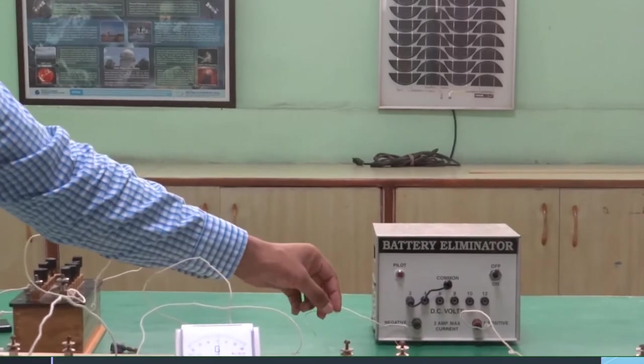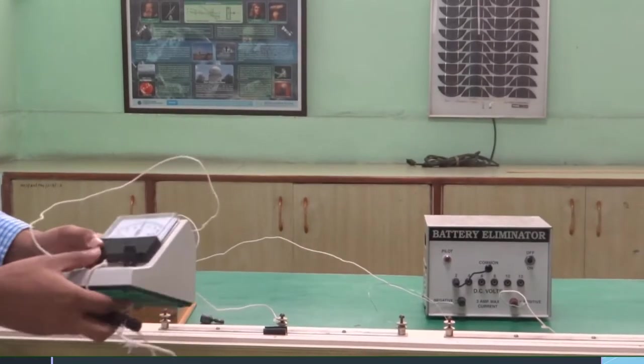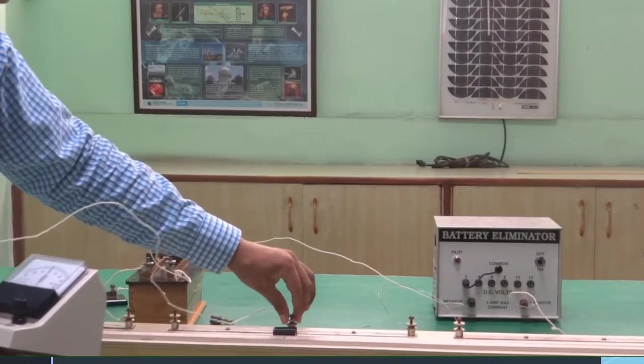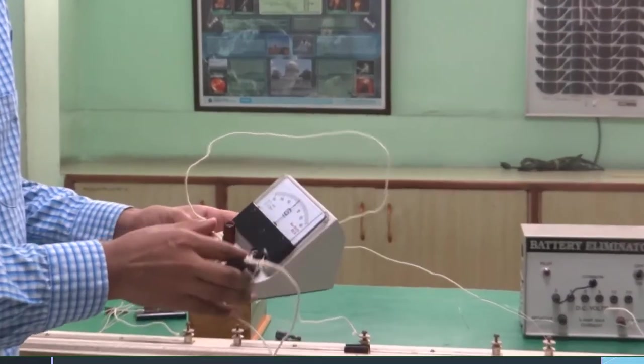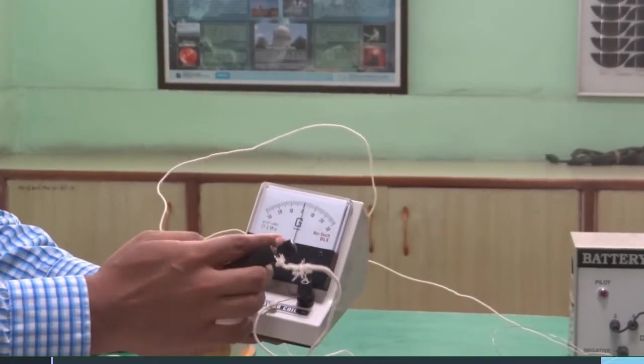The resistance of this wire is unknown. Next important thing is a jockey. This is used to determine the balance point. For the center, attach a wire and in series you will attach a galvanometer. Since the circuit is closed, now the deflection is at zero.